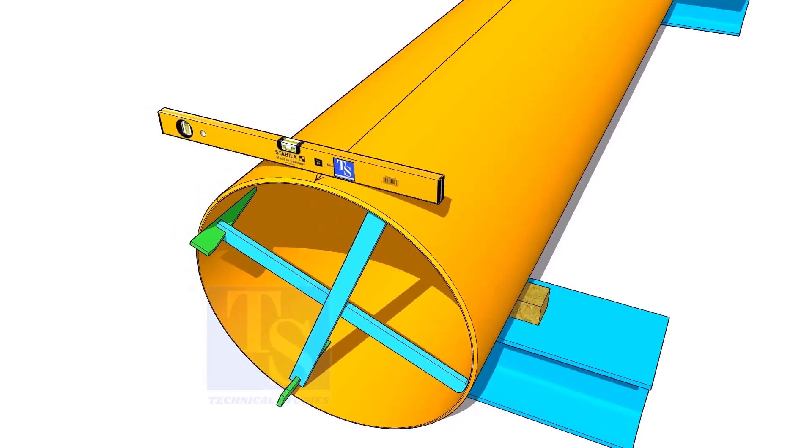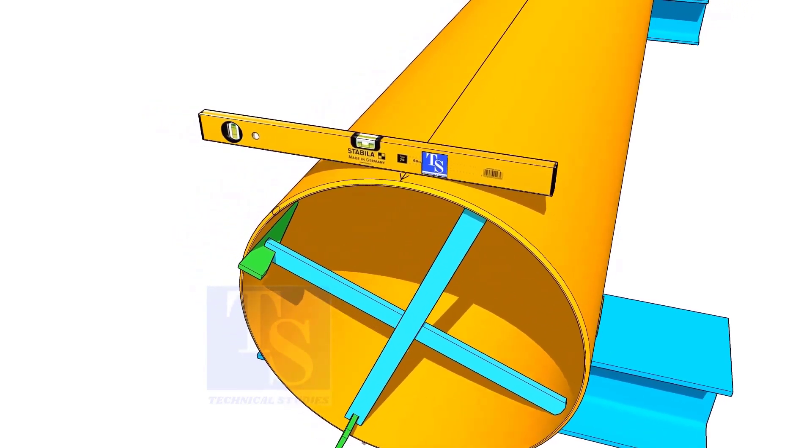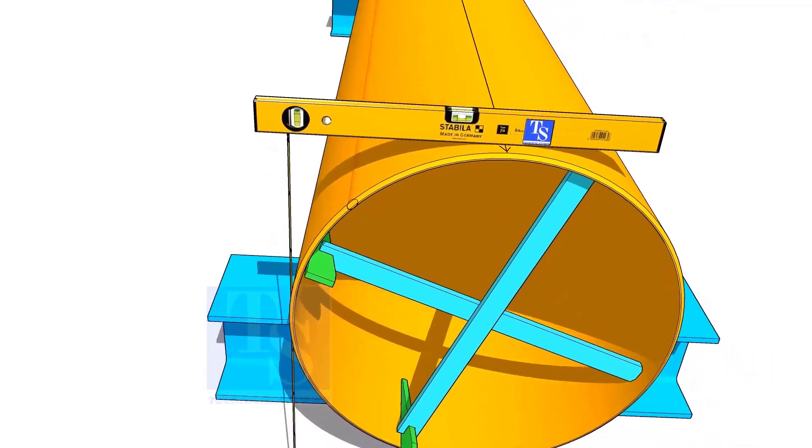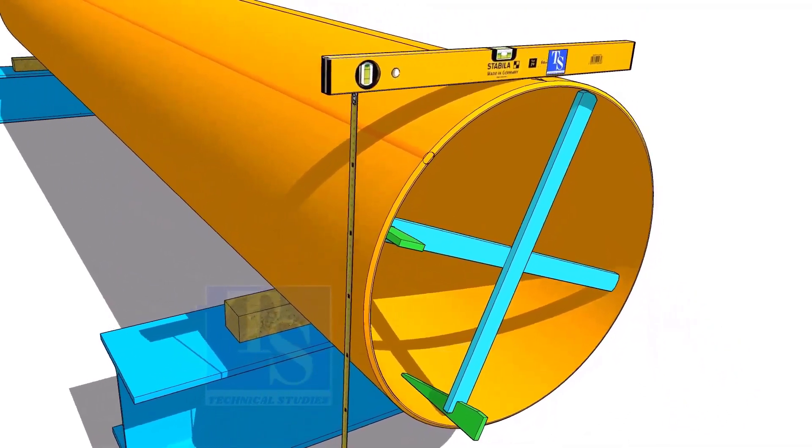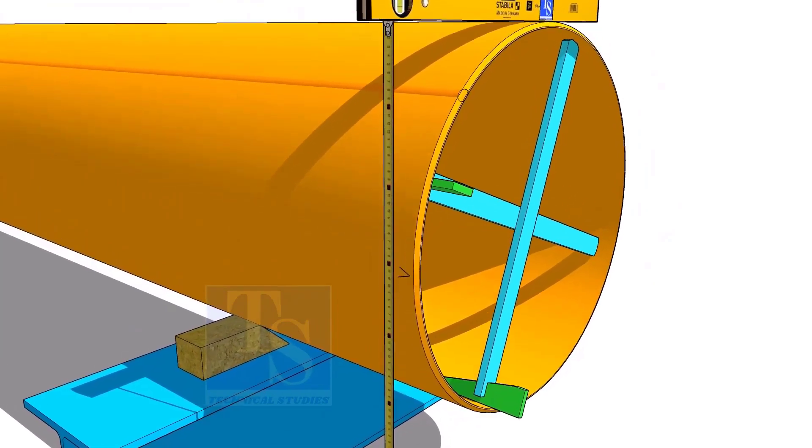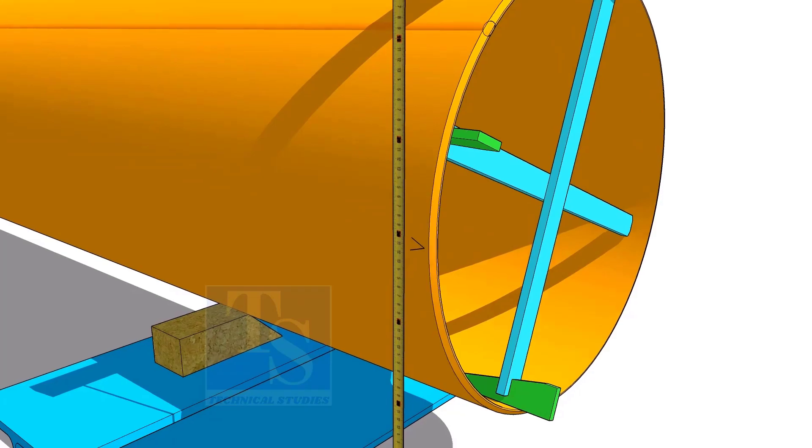Another method to mark the center line is, hold the level bottle horizontal and mark half OD on the side of the pipe. The advantage of this method is you can mark two opposite center lines at the same time.